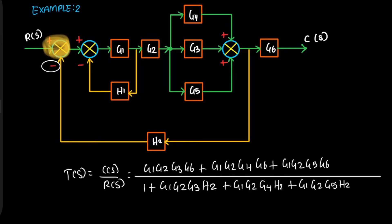Now the next feedback concept. From this summing point, there's only one path. The path gain is G1 and H1. So this is the final value.